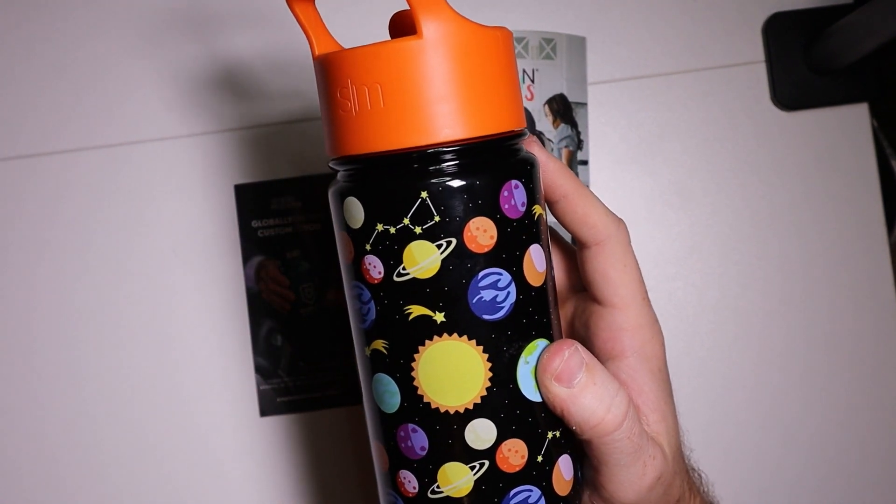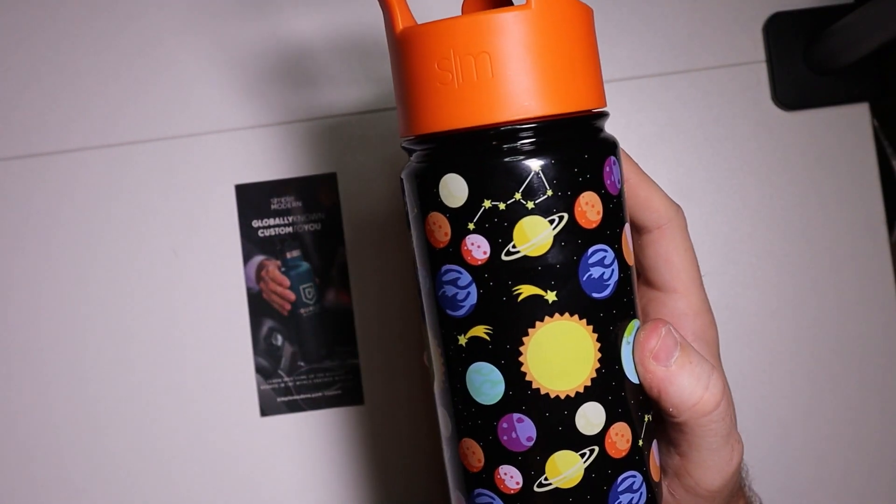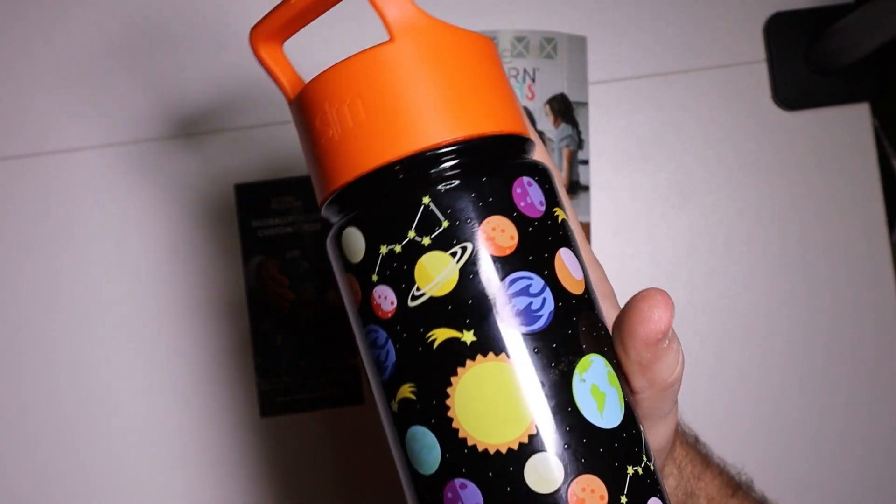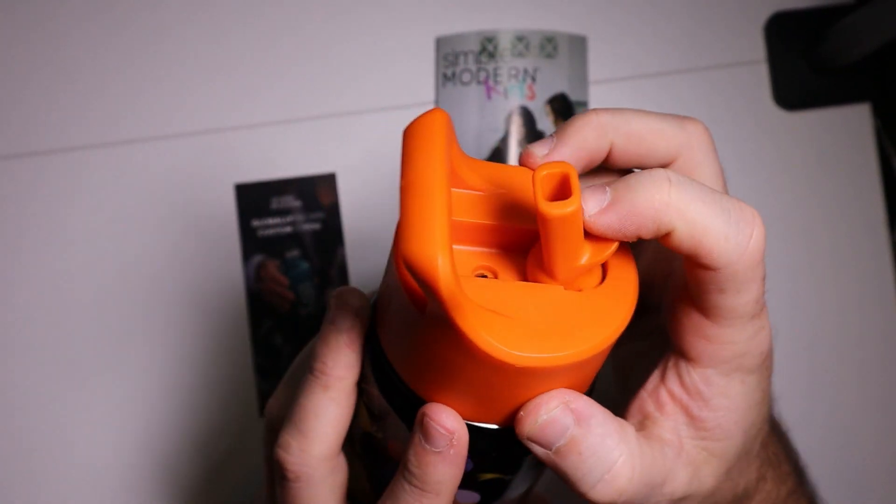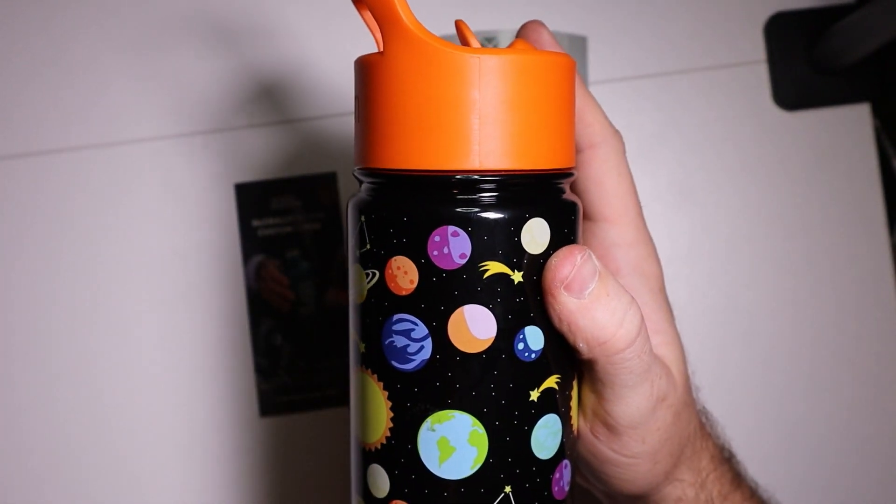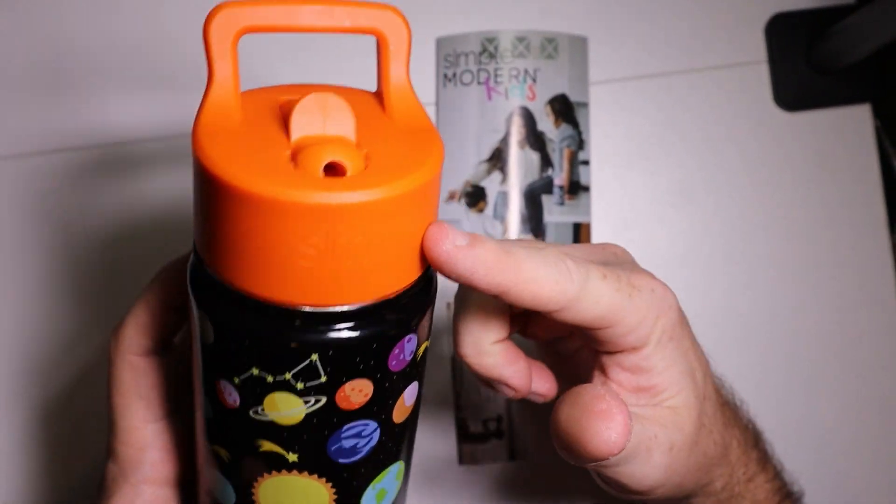All right, we have the 14-ounce Simple Living or Simple Modern kids water bottle. It does have a straw lid, as you can see, and this is supposed to be double insulated and BPA free. The lid is supposed to be BPA free.